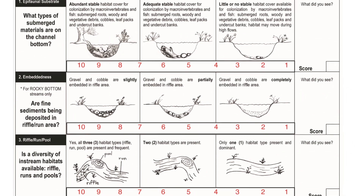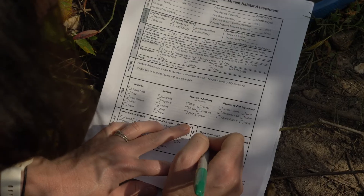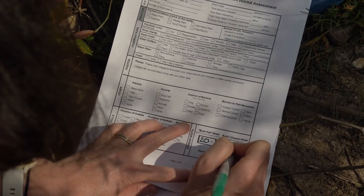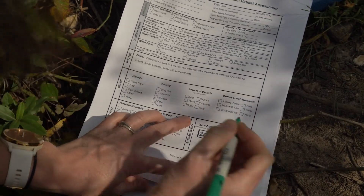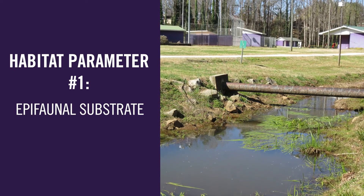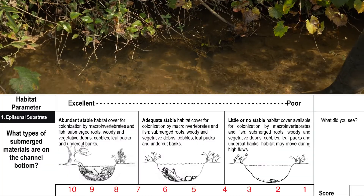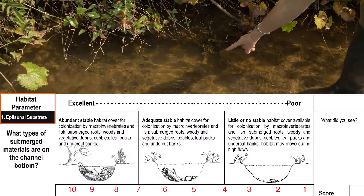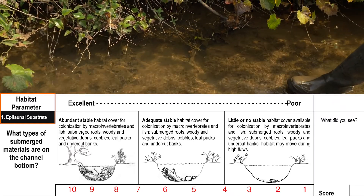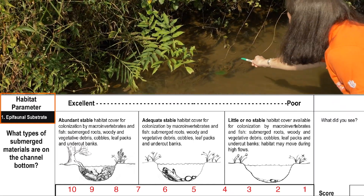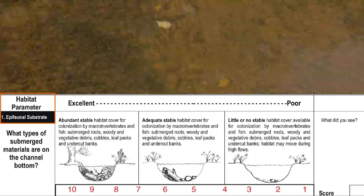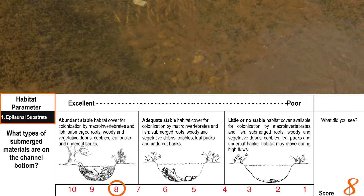All of the assessed conditions have excellent graphics to help you most consistently rate the stream. We will walk through each. Our first condition is epifaunal substrate, or the observation of submerged natural materials. Here we see submerged roots, some woody debris in leaf packs, cobble, but not in abundance.